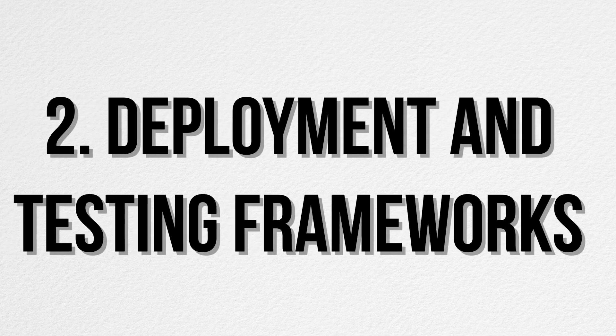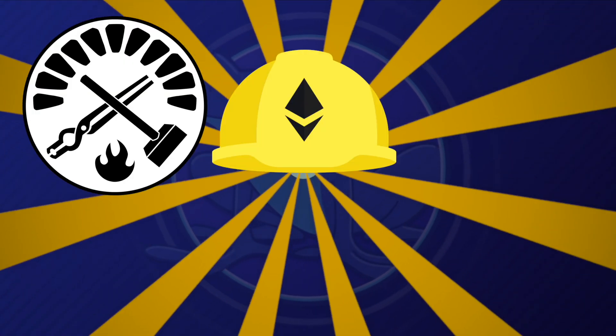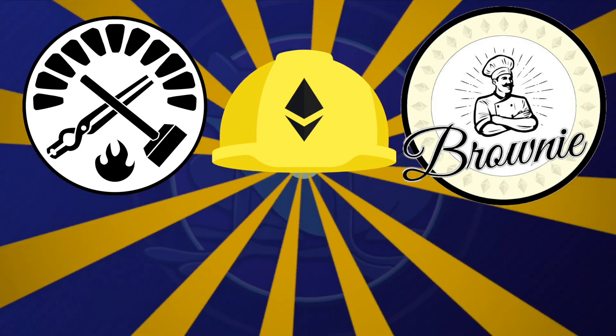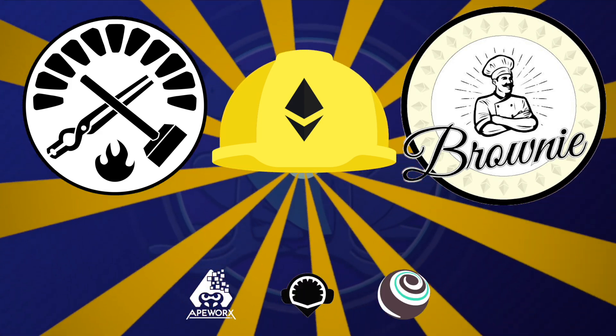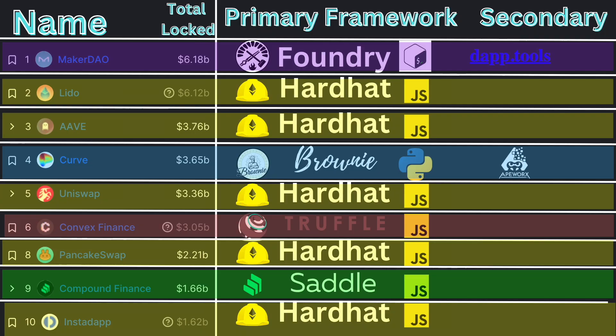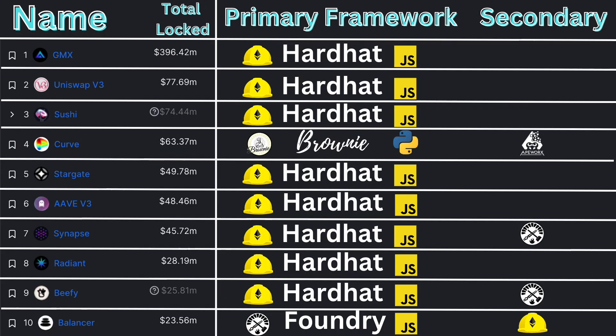Deployment and testing frameworks. The summary of this section is Foundry, Hardhat, or Brownie, and then Apeworx, Remix, Truffle. If you look across the top 10 DeFi protocols from this year, we see that Hardhat dominated, with five of the top 10 DeFi protocols using Hardhat. Even if we look at the top 10 DeFi protocols on Arbitrum, you can still see the dominance by Hardhat and JavaScript as the tooling framework of choice.